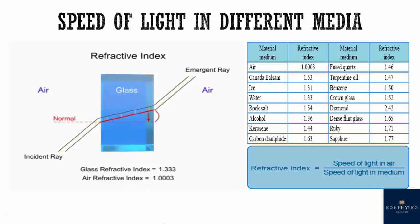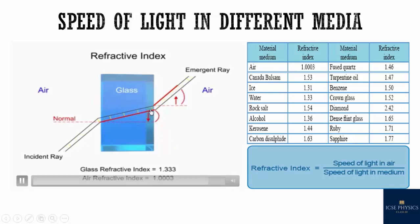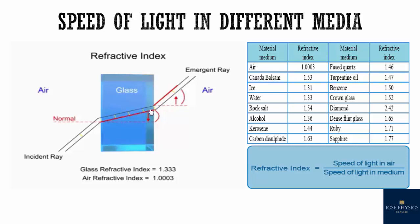The refractive index can also be calculated as: speed of light in air divided by speed of light in the medium. Any time a light ray travels from a medium with low refractive index, like air, to a medium with high refractive index, like glass, the light ray will bend towards the normal. When the light ray exits from a high refractive index medium to a low refractive index medium, like glass to air, the process is reversed — the beam bends away from the normal line.